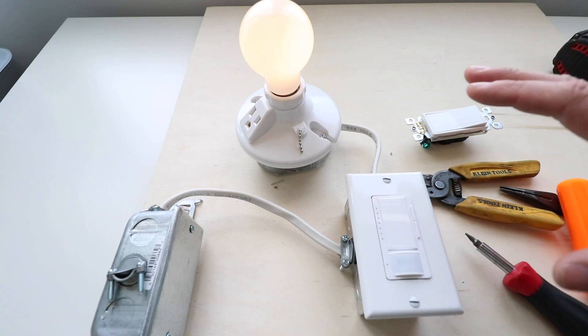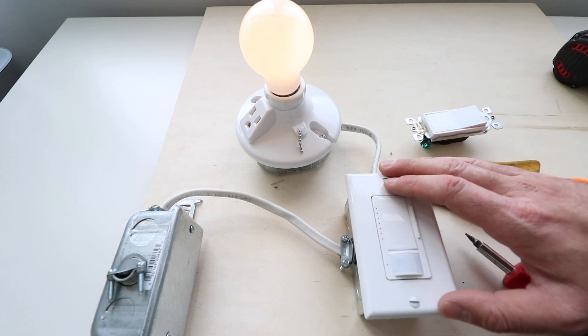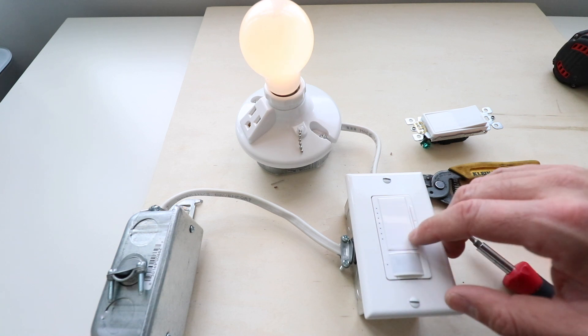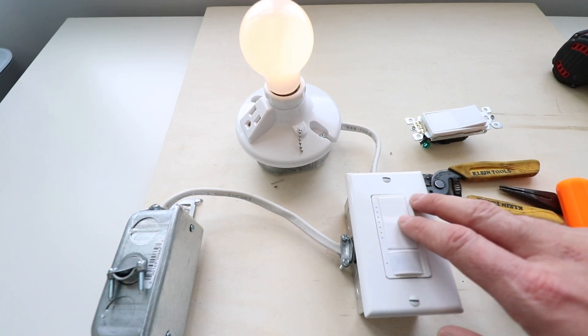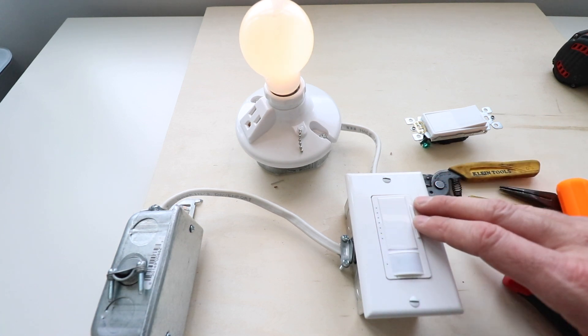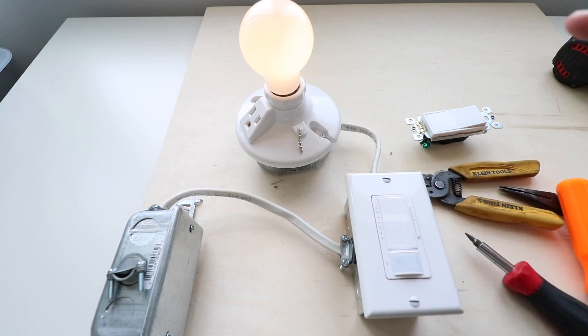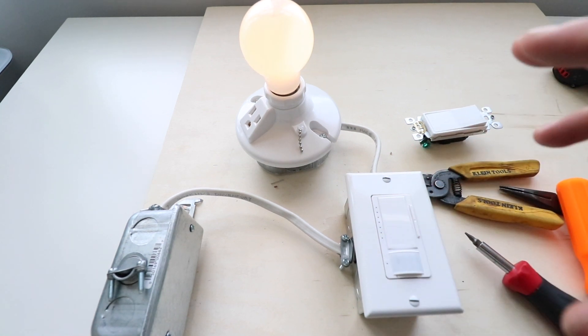Within the light switch itself by going through a series of programming steps where you hold down the buttons for a certain amount of time and then click them up or down and it will allow you to adjust that. So we will show a programming video for this motion sensor light switch in another one that goes in depth. So you know how to do that.